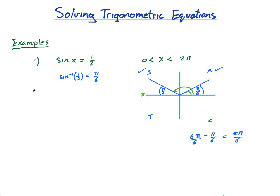So my solutions are x equals π over 6. That's my first solution. And 5π over 6. That is my second solution.